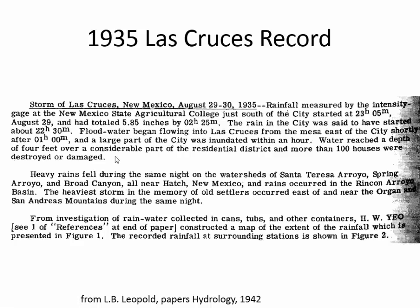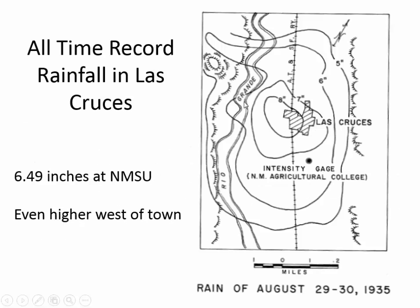Flood water began flowing into Las Cruces from the mesa east of the city shortly after 1 AM, and a large part of the city was inundated within an hour. Water reached a depth of four feet over a considerable part of the residential district, and more than a hundred houses were destroyed or damaged. Because there were very few rain gauges in the area, investigators used rainwater collecting cans, tubs, and other containers to construct a map of the extent of rainfall. The official NMSU measurement — then called Ag College — was 6.49 inches, but some areas appear to have had more than eight inches.